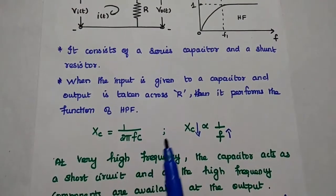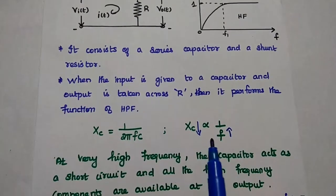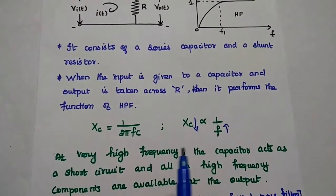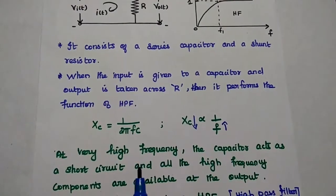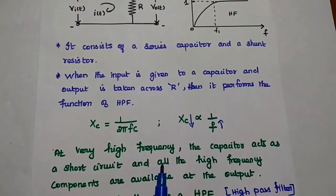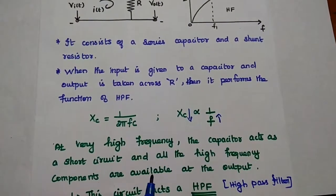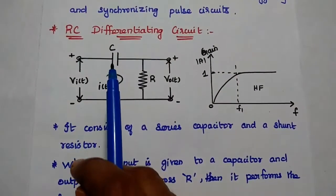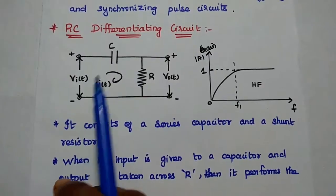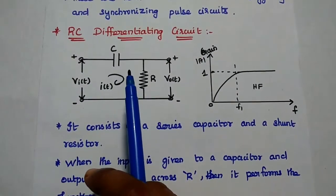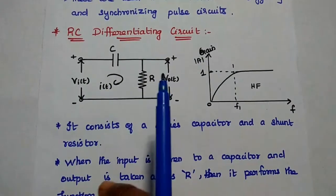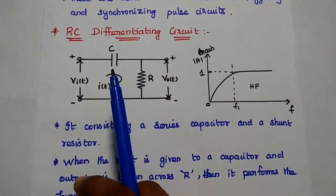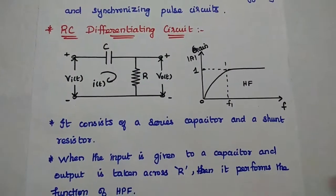At high frequency, the capacitive reactance is very low. Then the capacitor can act as a short circuit. If it is a short circuit, we can get the output which is equal to the input. So all the high frequency components are available at the output side. Hence, the circuit can act as a high pass filter. The capacitive reactance is inversely proportional to frequency, so at high frequency this capacitor acts as a short circuit to provide all the high frequency components at the output side. At low frequency, it can act as an open circuit, and there is no output.